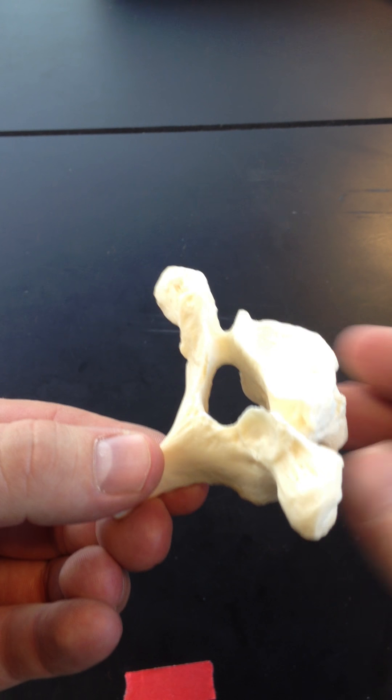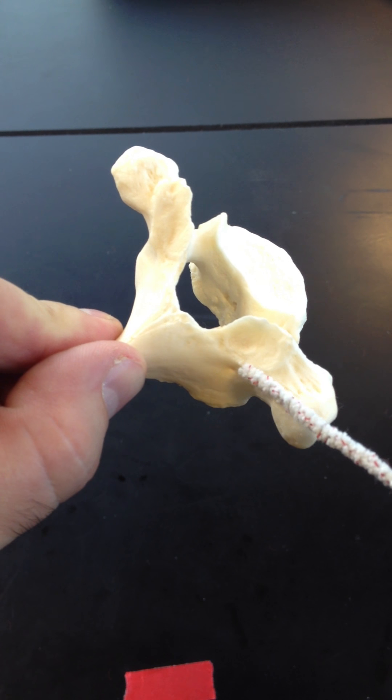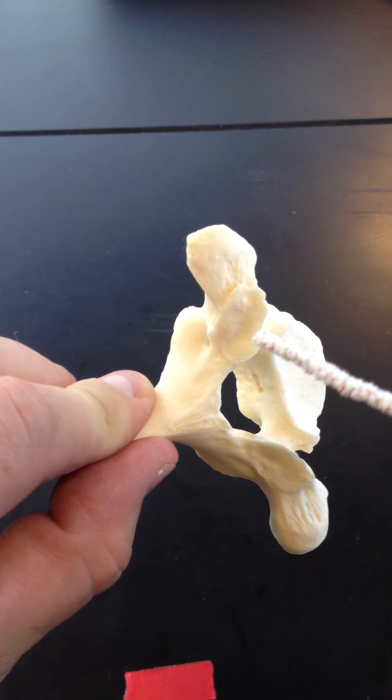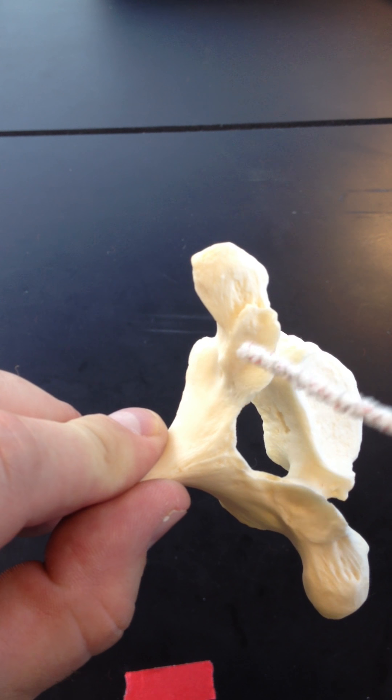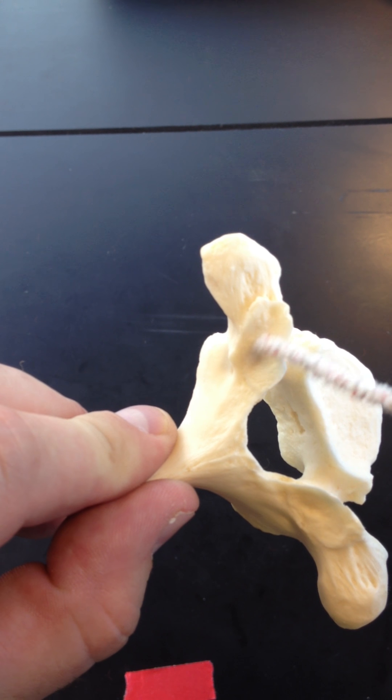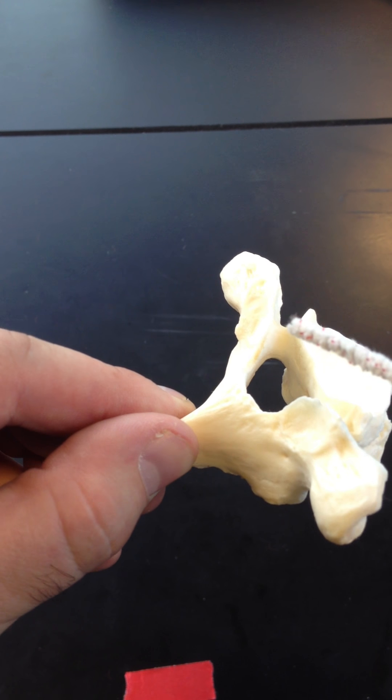Still those vertebrae need to articulate with each other, so this is T1. It's got superior articular processes and facets on those processes, or smoothed parts, to articulate with the inferior articular facets of C7, which would sit above this.